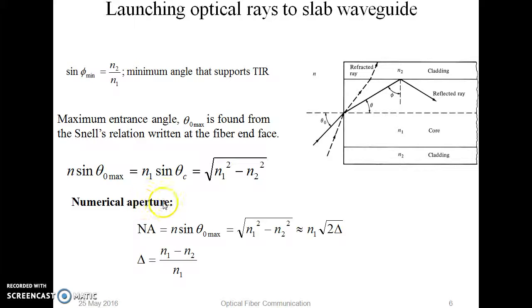Numerical aperture of a fiber is a most important characteristic, which defines a figure of merit given as NA, which is equal to square root of N1 squared minus N2 squared, which is approximately equal to N1 times square root of 2 delta, where delta is the refractive index difference. N1 is the core refractive index, and N2 is the cladding refractive index.